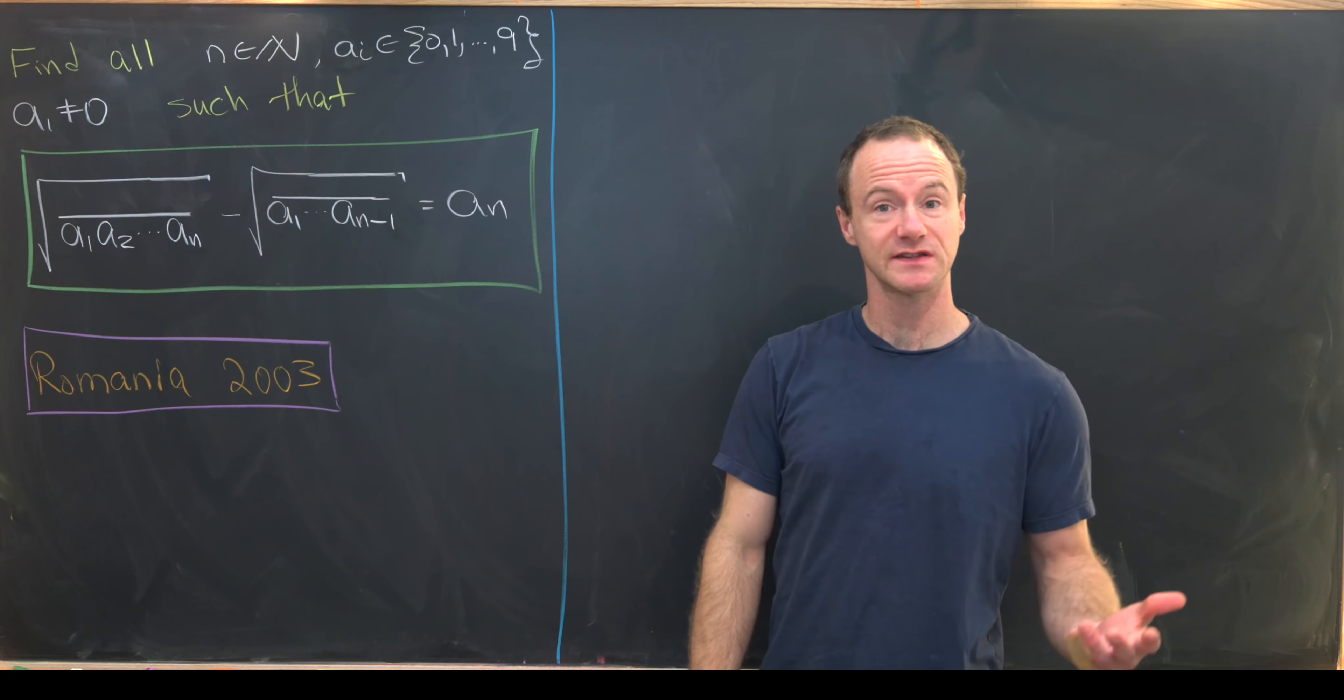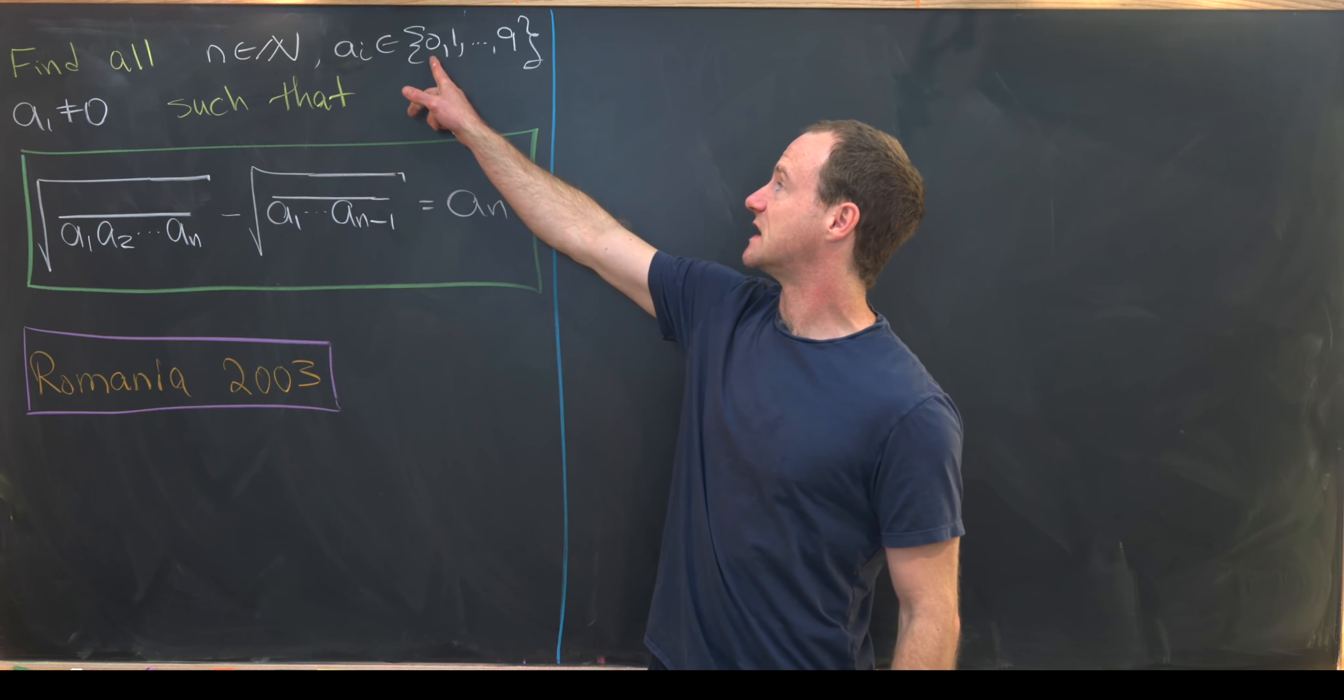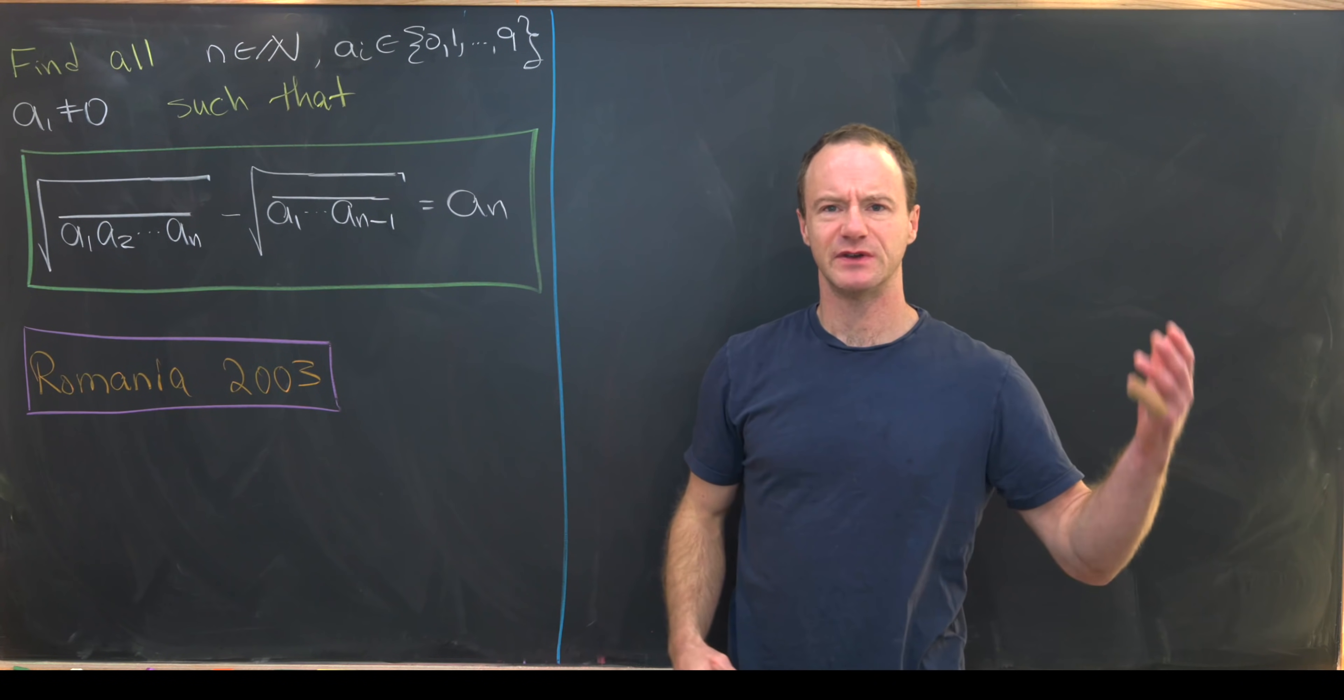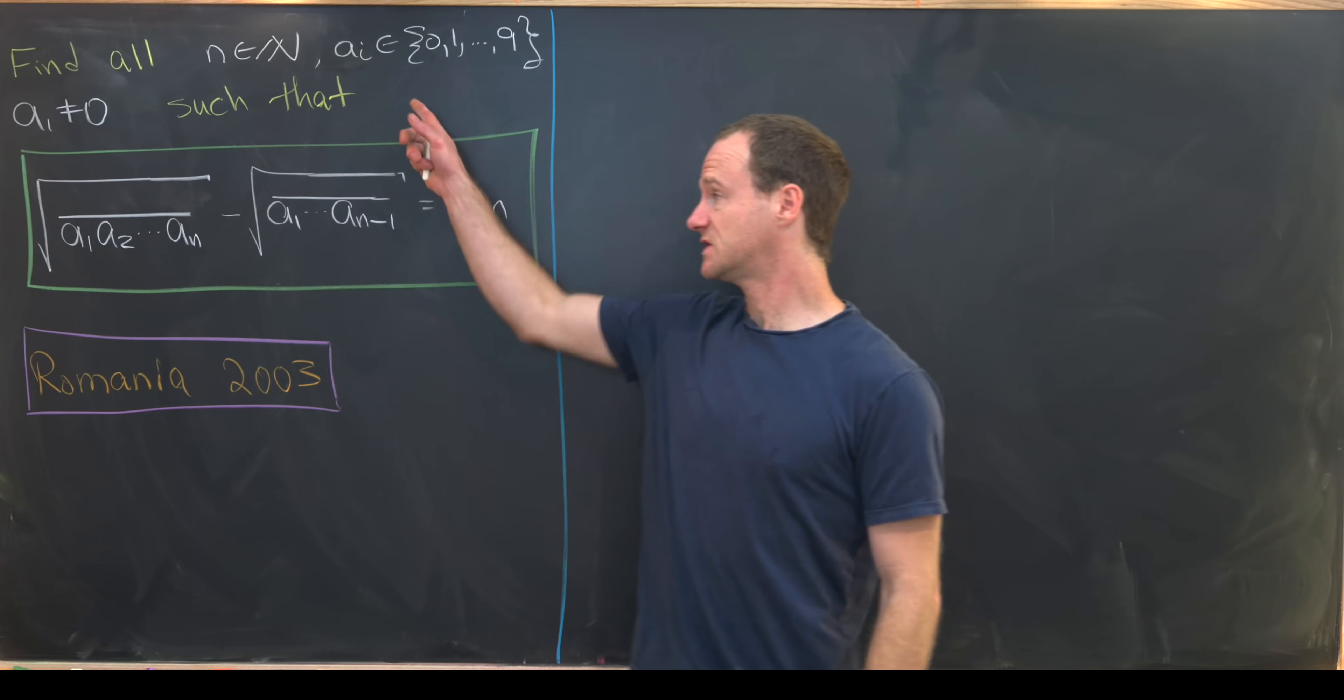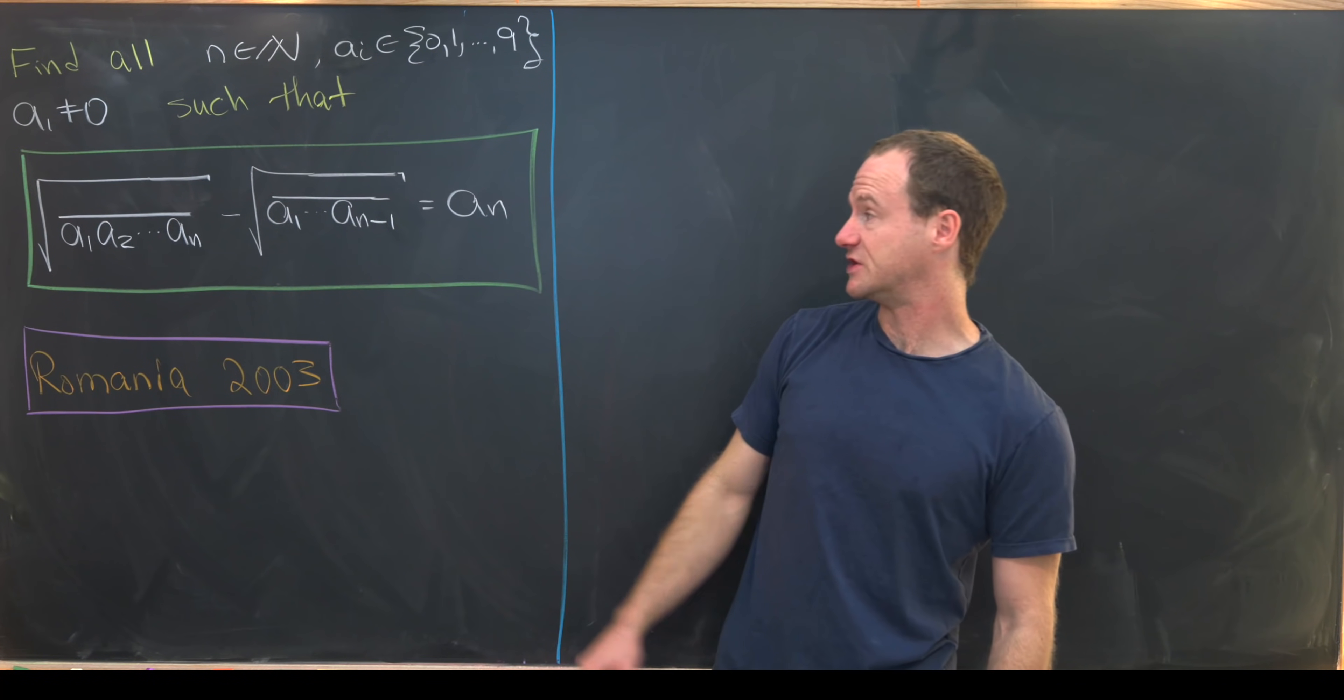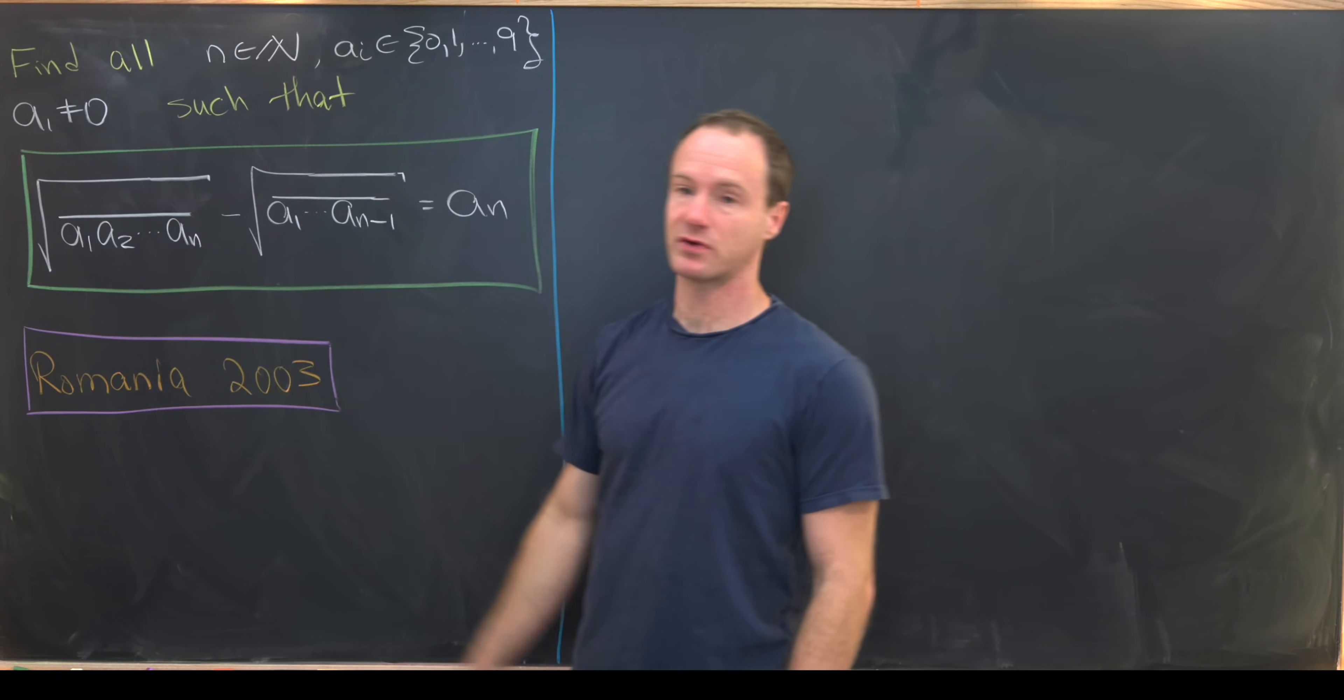Now that we've said that, let's look at the statement of this problem. We want to find all natural numbers n and ai from the set 0, 1, up to 9, where a1 is not equal to 0. That just means we don't have any leading zeros on the left hand side of our number, such that the square root of the number formed from the digits a1 to an minus the square root of the number formed from the digits a1 up to an-1 is equal to this last digit an.